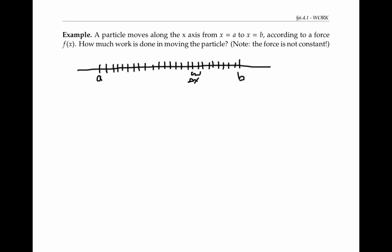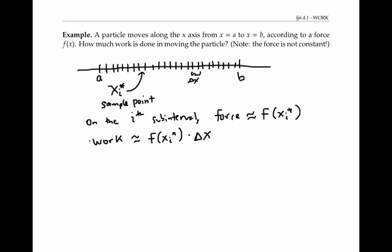As usual, let's pick a sample point, x sub i star, in the i-th sub interval for each little sub interval. X sub i star could be the left endpoint of the sub interval, the right endpoint, or any point in the middle. Now, on the i-th sub interval, the force is approximately constant, is approximately equal to f at x sub i star. Therefore, the work on that i-th sub interval is approximately equal to this constant f of x sub i star times the distance that the particle is going on that sub interval. But that distance is just the length of the sub interval delta x.